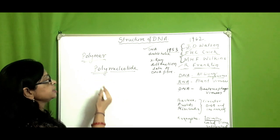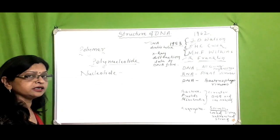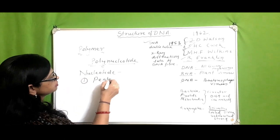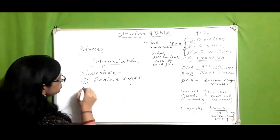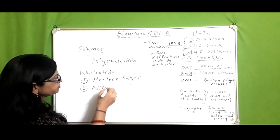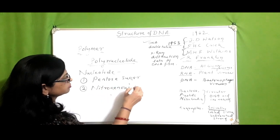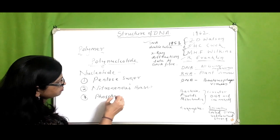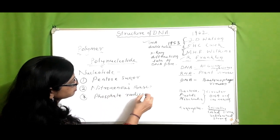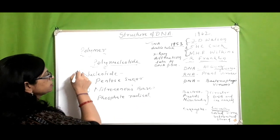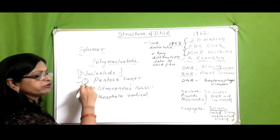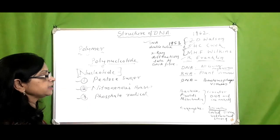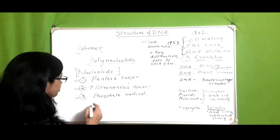Since DNA is a polynucleotide, we need to understand what a nucleotide is. A nucleotide is composed of a pentose sugar, a nitrogenous base, and a phosphate radical. There is another term — nucleoside.